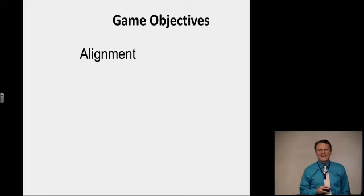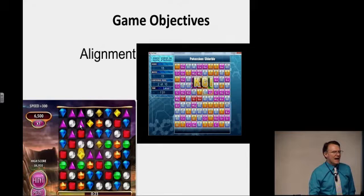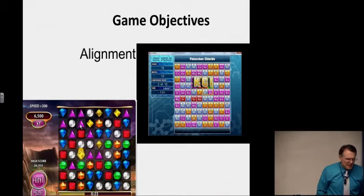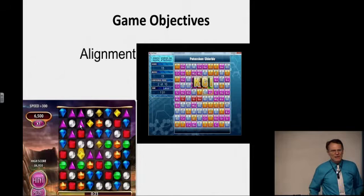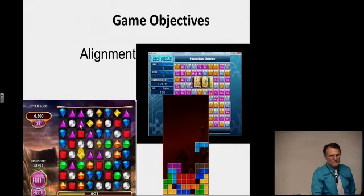Alignment games are where you're trying to get pieces or units into some certain alignment. Any of the Bejeweled games are alignment games — you're lining up pieces to achieve an outcome. Here is Ion Field, a game developed for Lorain County Community College online chemistry courses to teach the octet rule — basically a Bejeweled-style game where you line up ions to form molecules. Tetris, of course, is a classic alignment game where you fill in gaps with different-shaped pieces.